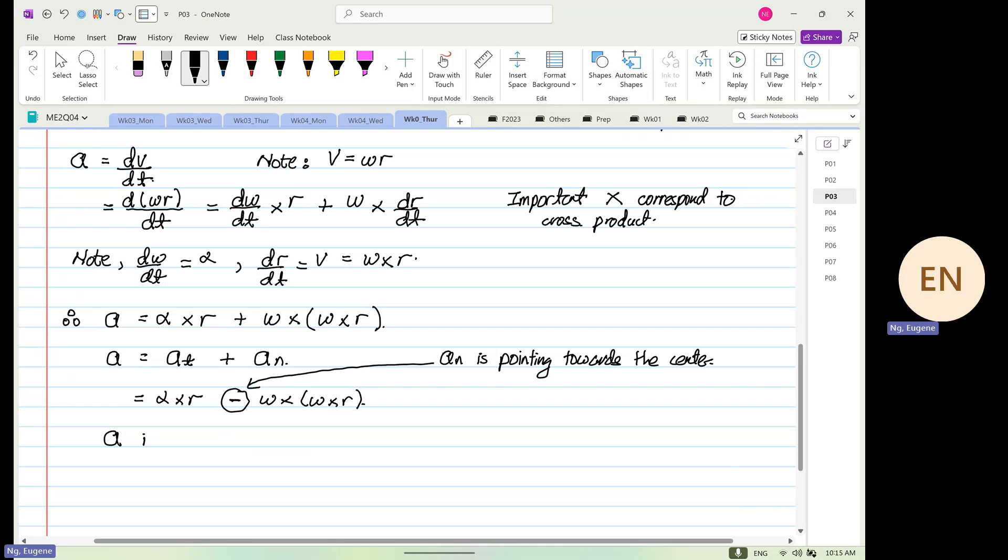And finally a in magnitude can be determined from or by the below expression. a is equal to square root of a_t squared plus by a_n squared. To be clear, so all this they are in what? Vector form. You cannot just write like you calculate alpha cross r and just add them. They are all in vector form.